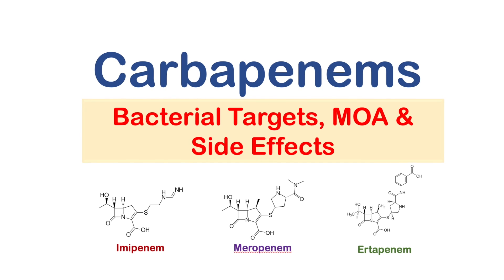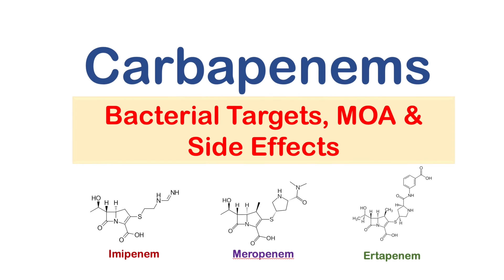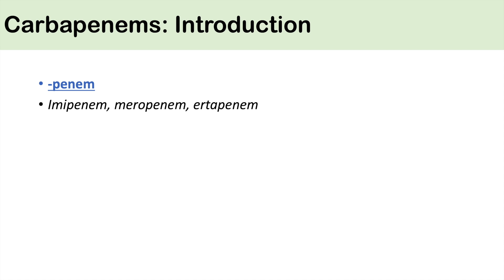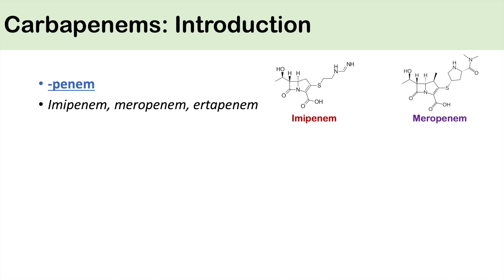In this lesson we're going to talk about the carbapenem antibiotics. The carbapenem antibiotics all end in 'penem' — they all have the suffix 'penem,' which makes them easy to identify. Some examples of carbapenems include imipenem, meropenem, and the newer carbapenem known as ertapenem.